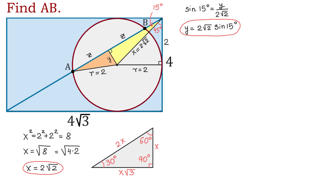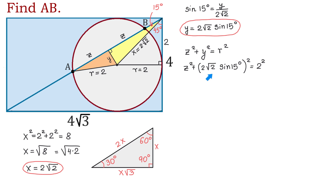In this orange triangle we can use the Pythagorean theorem to find Z. We will write that Z squared plus Y squared equals R squared. Then we will replace Y with 2 square root of 2 sine of 15 degrees, all squared, equals R which is 2 squared. Here, 2 squared is 4, square root of 2 squared is 2, so 4 times 2 will be 8. Now we will have Z squared plus 8 sine squared of 15 degrees equals 4. Then Z squared equals 4 minus 8 sine squared of 15 degrees.